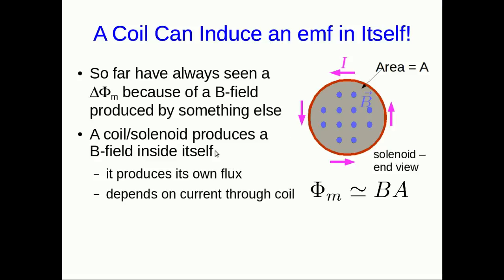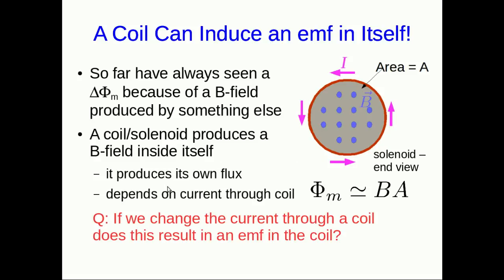And so this raises a question because we know Faraday's law tells us that if the flux through the coil changes it'll generate an emf on the coil. Well, so since the coil produces its own flux, if we change the current through the coil does this result in an emf in the coil? That might seem sort of strange to you because things can't exert forces on themselves and these emfs are to do with forces being exerted on the charges. Surely this current can't exert a force on itself, right?